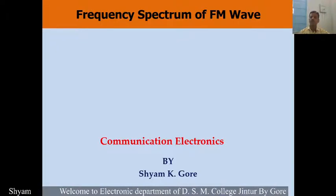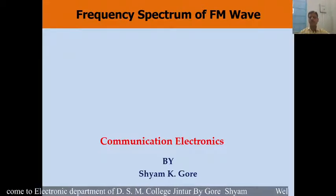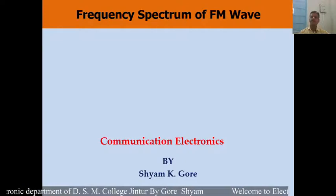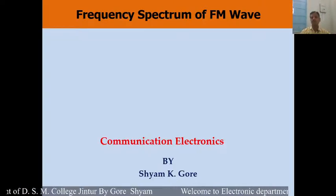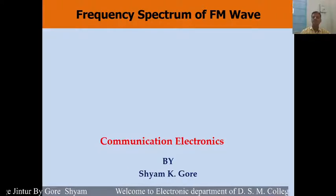In frequency modulation, after modulation, we observe the different types of frequencies in the frequency modulated carrier wave. That can be obtained by observing the frequency spectrum of FM. Let us find out how many frequencies are present in the frequency modulated carrier wave.